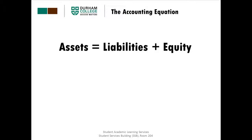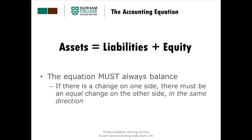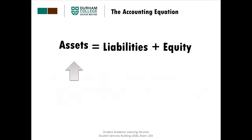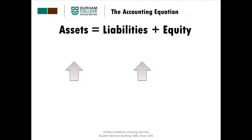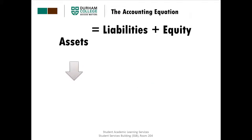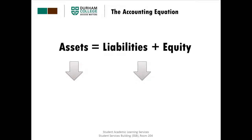Because it is actually a mathematical equation, there are some things we know must be true. The equation must always balance. What this means is that if there is change on one side of the equation, there must be equal change on the other side in the same direction. So if one side of the equation goes up, the other side must also go up. If one side of the equation goes down, the other side must also go down.